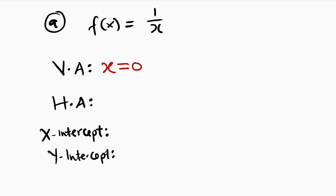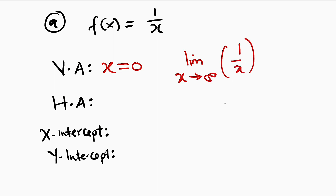For the horizontal asymptote, we evaluate the limit as x approaches infinity of 1/x. This approaches 0, therefore y = 0 is the horizontal asymptote. The simplest way to find the horizontal asymptote is by considering the degrees of the numerator and denominator. If the degree of the denominator is higher than that of the numerator, y will always equal 0.